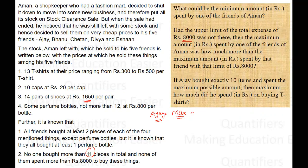Every person needs two pieces of shoes. He has a total of 14 pairs of shoes. So Bhanu needs two pairs, Chetan needs two pairs, Divya and Ashantoo each need two pairs. Up to this point, eight pairs of shoes are gone. So Ajay can buy at max six pairs of shoes. Let's say Ajay is buying two T-shirts — that is the minimum requirement.